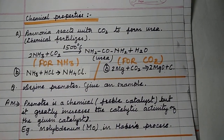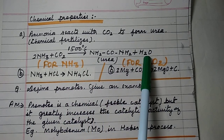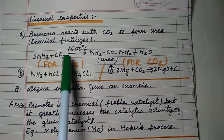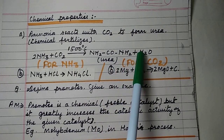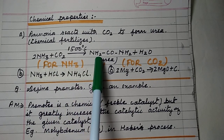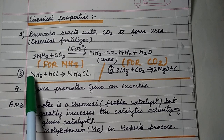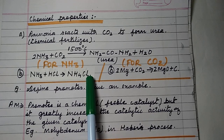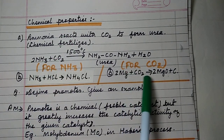Chemical properties of ammonia: first, ammonia reacts with carbon dioxide to form urea and water — 2NH3 + CO2 → NH2CONH2 + H2O, heated at 150 degrees Celsius. Urea is a chemical fertilizer. Note: this point can be written for both ammonia and carbon dioxide gas. Second, ammonia reacts with hydrochloric acid to form ammonium chloride, NH3 + HCl → NH4Cl, as already discussed in its test.